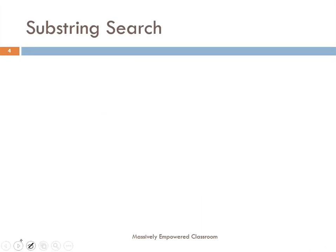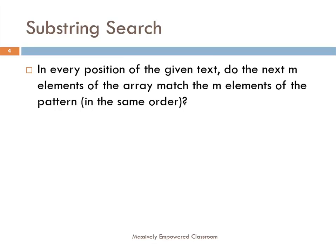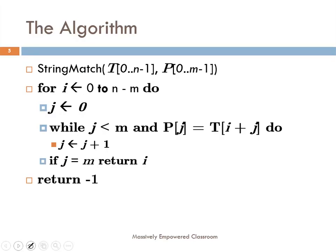Now let us write the algorithm for string match. The idea is: at every position of the given text T, do the next M elements of the text match the M elements of the pattern P in the same order? If there is a match, we have found a successful search; otherwise, we advance the position and repeat. The algorithm string match takes two inputs: text of N elements (T is from 0 to N−1) and pattern of M elements (P is from 0 to M−1), where M must be less than or equal to N. We start at the beginning of the text with I equals 0, and we go till N minus M — not N minus 1 — because there must be M elements remaining to compare to the pattern.